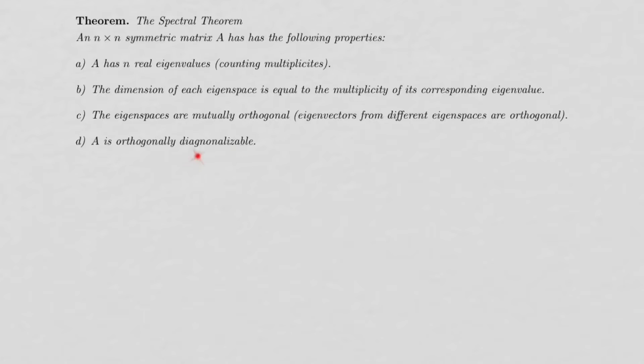A is orthogonally diagonalizable if it's symmetric. So if A is a symmetric matrix, then A is orthogonally diagonalizable. We also know that the eigenspaces are mutually orthogonal, which means eigenvectors from different eigenspaces are orthogonal to each other.